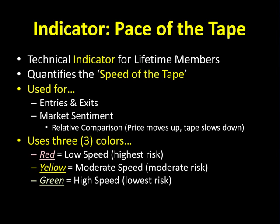Speed of the tape confirms interest in the direction of that trade or interest in the direction of the market. So if we see the pace of the tape speed up, we look for price action — wherever it moves, that's going to be the overall market sentiment. We use relative comparison: how does the pace of the tape look compared to what the market is doing? This pace of the tape indicator uses three basic colors — red, yellow, and green. Red means very low speed of the tape and the highest risk. Yellow means moderate speed or moderate risk. Green means high speed of the tape and the lowest risk associated with these trades.